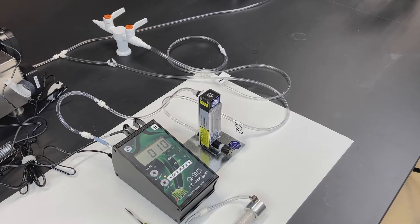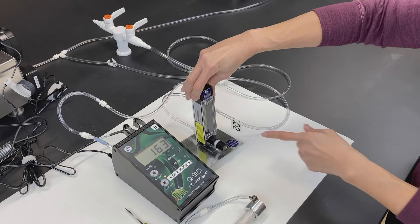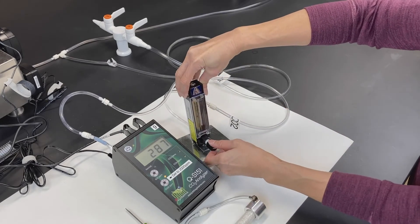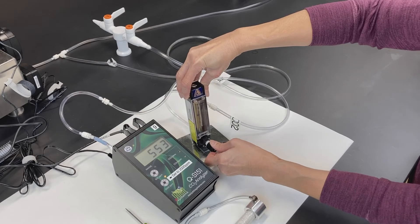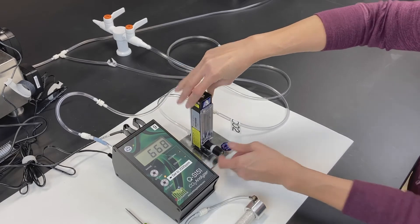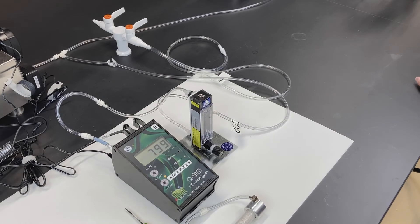Turn on the carbon dioxide and adjust the flow rate to 600 milliliters per minute if needed. You should see the reading on the gas analyzer increase. Wait for it to stabilize.